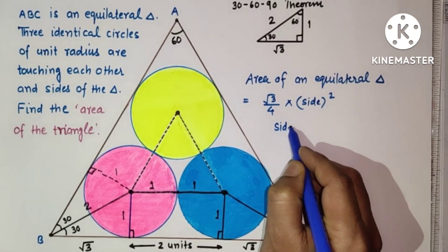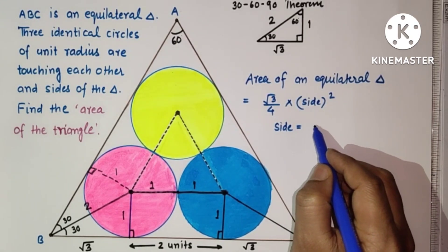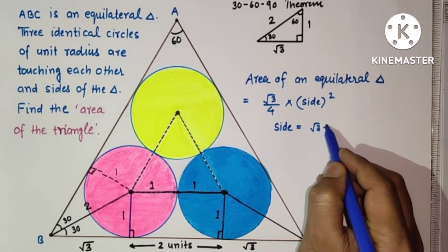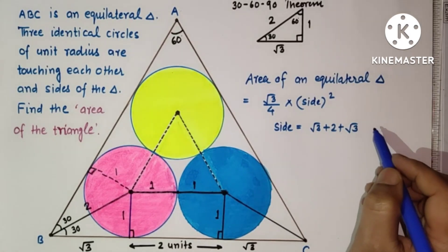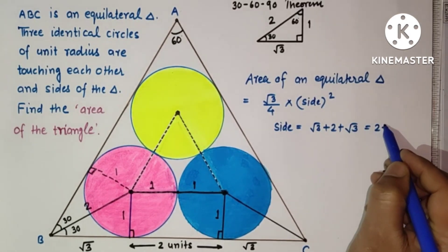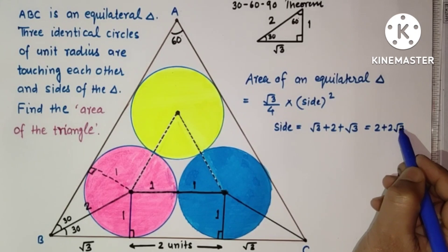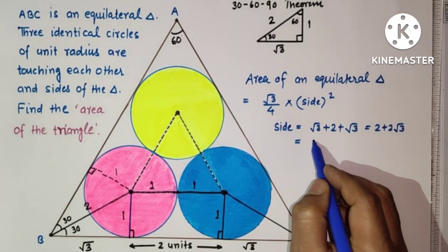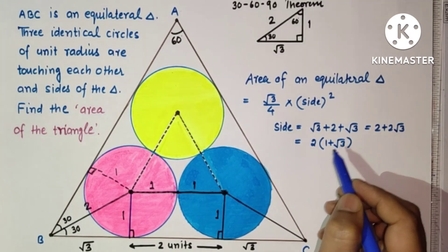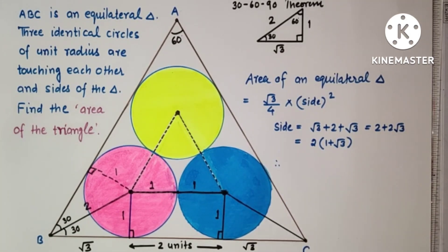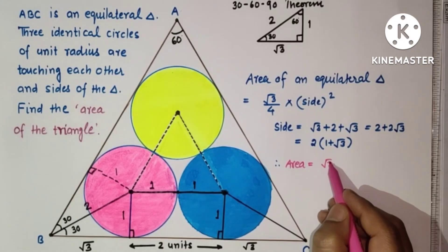Side is given as root 3 plus 2 plus root 3, that is equal to 2 plus 2 root 3, and that is equal to 2 times 1 plus root 3. So therefore area required is equal to root 3 by 4.